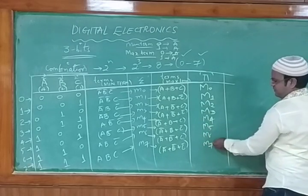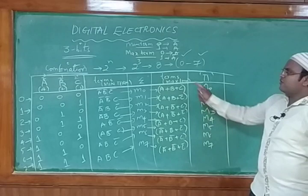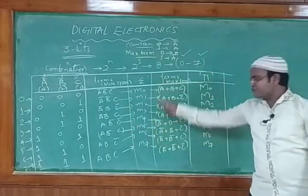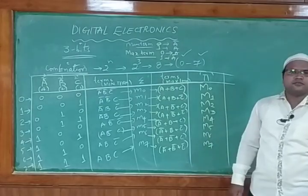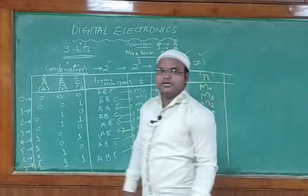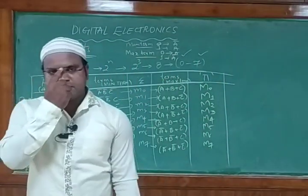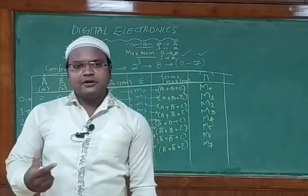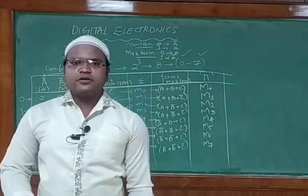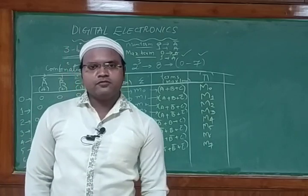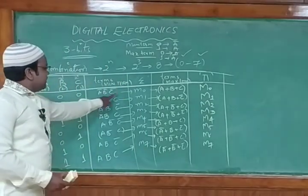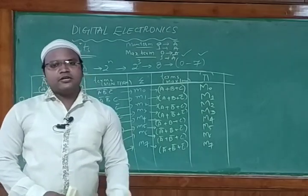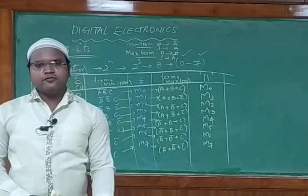This is the way three-bit inputs are represented in terms of minterm as well as maxterm. In the problems, they will give you bits in numbers — the decimal values — and you need to convert them into minterm or maxterm form and solve the problems accordingly. Thank you for watching today's video.